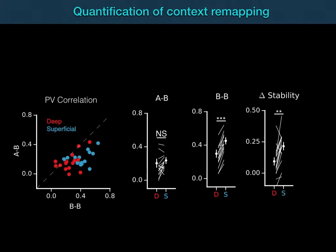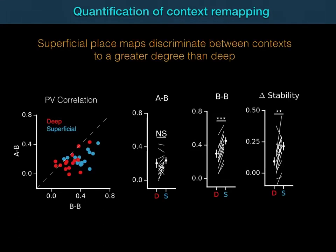Here we show the summary data from the population-vector correlation analysis. Each circle on the left represents a single field of view. Both sublayers remapped similarly in the AB condition, but superficial maps were significantly more stable in the BB condition than deep, resulting in a greater difference in stability between conditions for superficial CA1 pyramidal cells.